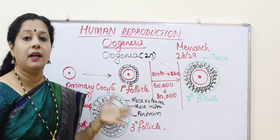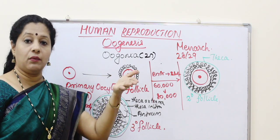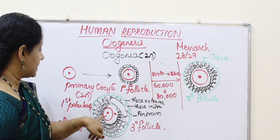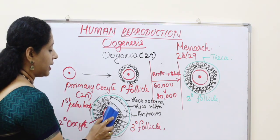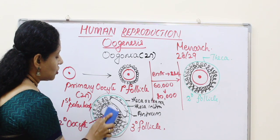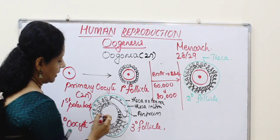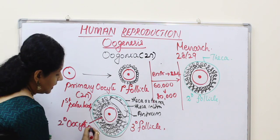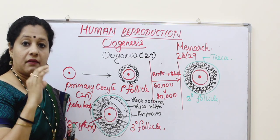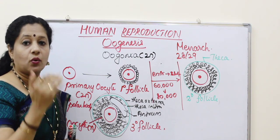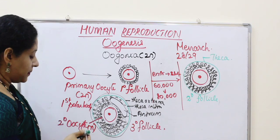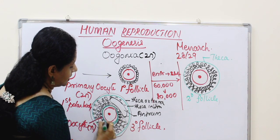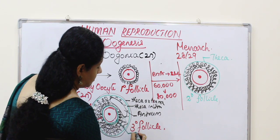The first polar body may degenerate or it may later divide to form two polar bodies. The secondary oocyte is haploid because meiosis 1 is complete and the chromosome number became half. The secondary oocyte also forms an outer layer called the zona pellucida.